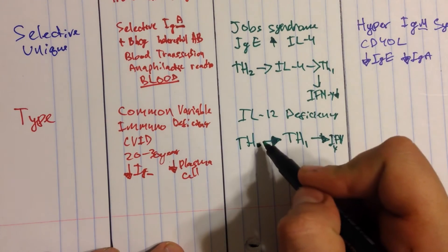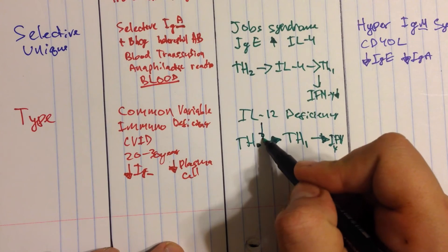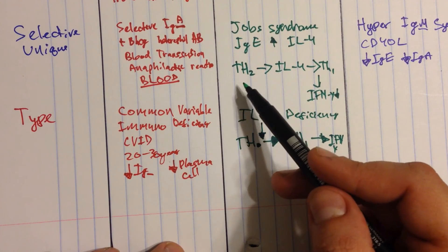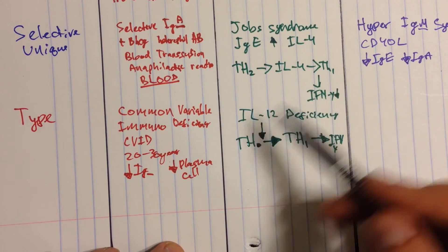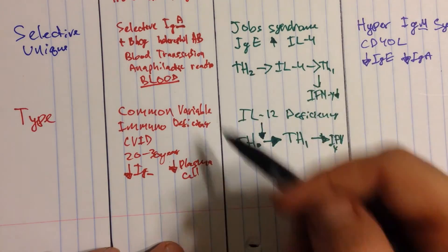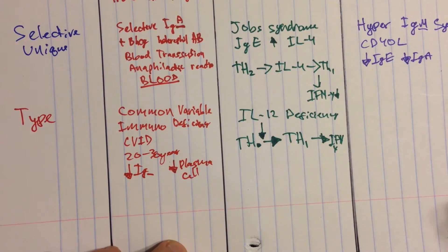But in this case, that's not happening because interleukin-12 can't act here to encourage this happening and you have basically this response, where you're going down the T helper 2 line because there's no interferon gamma being produced. And again, it's just these two diseases, they're like brothers. It's a very similar result.